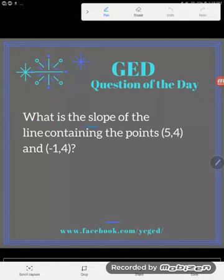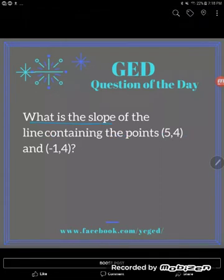It says, what is the slope of the line containing the points (5,4) and (-1,4)? And again, we've been asked to find slope.